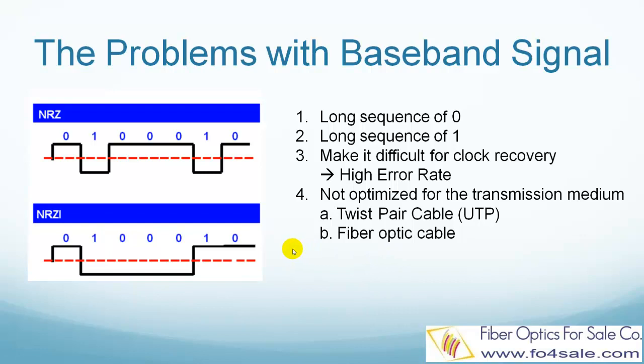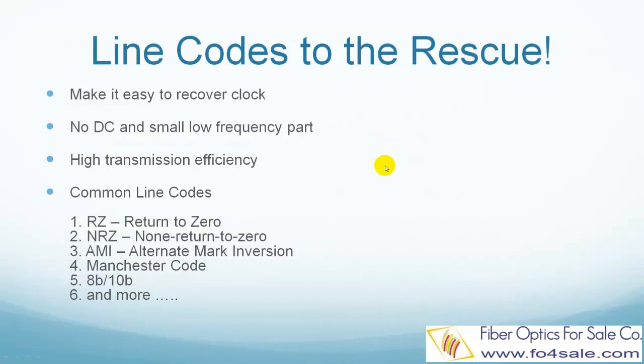That is when line codes come to the rescue. What is exactly line code? Line code is developed to solve the problem we just talked about. Line code is basically a digital data coding process. In this process, a line code is chosen for a particular transmission system. This line code is optimized for the physical properties of the medium.